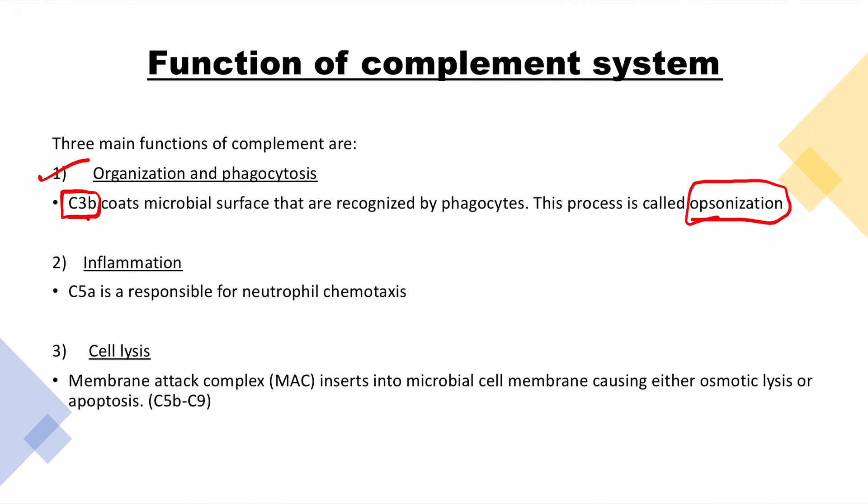Inflammation. C5A is responsible for neutrophil chemotaxis. There are many other chemoattractants for neutrophils which I mentioned in my second video which you should be aware of.